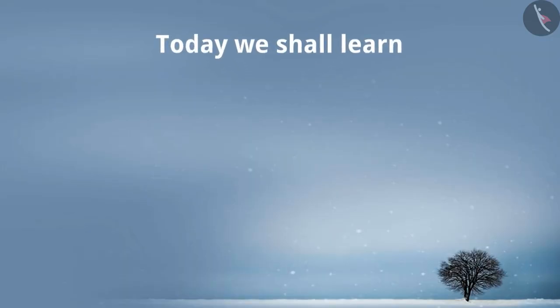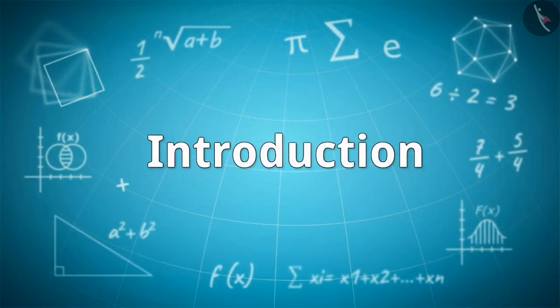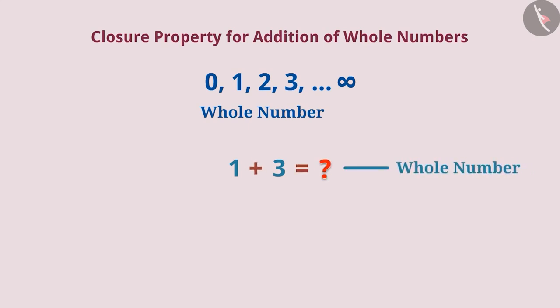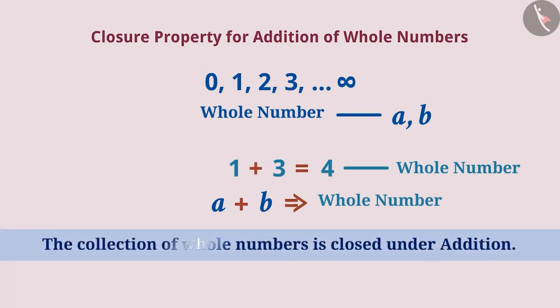In this video, we shall learn the Closure property with reference to the following mathematical operations of whole numbers. We already know that all the numbers from 0 to infinity are called whole numbers. If you are asked to take any two whole numbers from a collection of whole numbers and add them, will the result be a whole number? Yes, we can say that the sum of any two whole numbers is always a whole number. That is, the collection of whole numbers is closed under Addition.